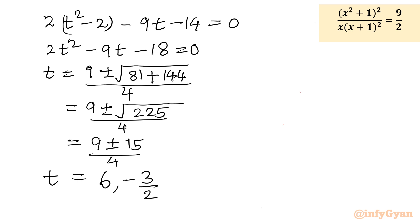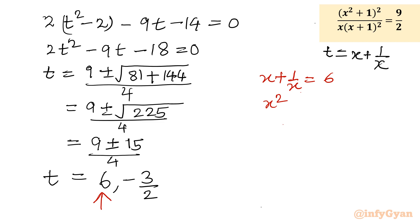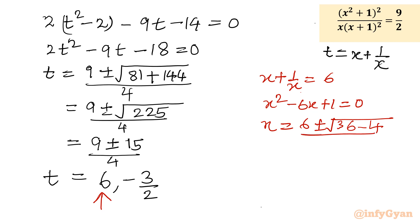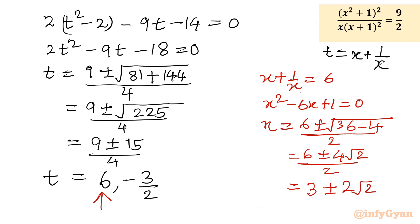These are the two values of t, our substitution x + 1/x. For t = 6: x + 1/x = 6. Multiplying both sides by x and rearranging gives x² minus 6x + 1 = 0. Applying the quadratic formula: x equals (6 plus or minus square root of 36 minus 4) over 2, which gives 6 plus or minus root 32. Root 32 equals 4√2, so x equals 3 plus or minus 2√2.